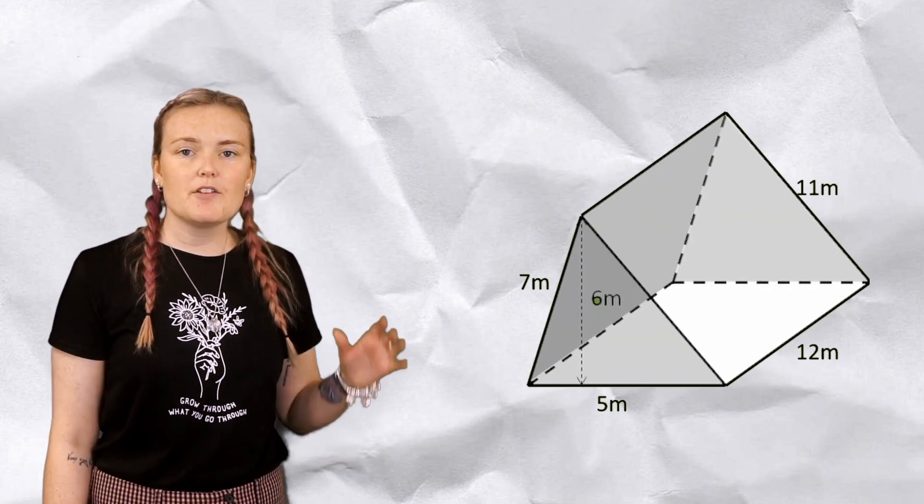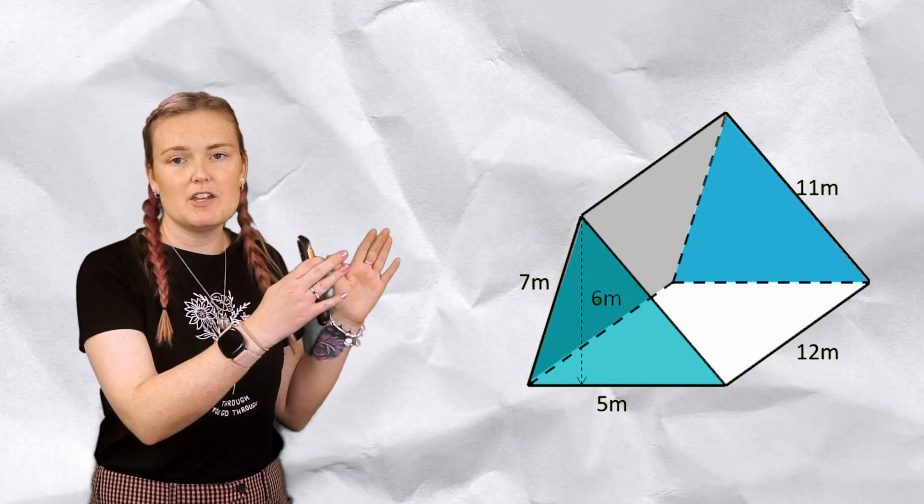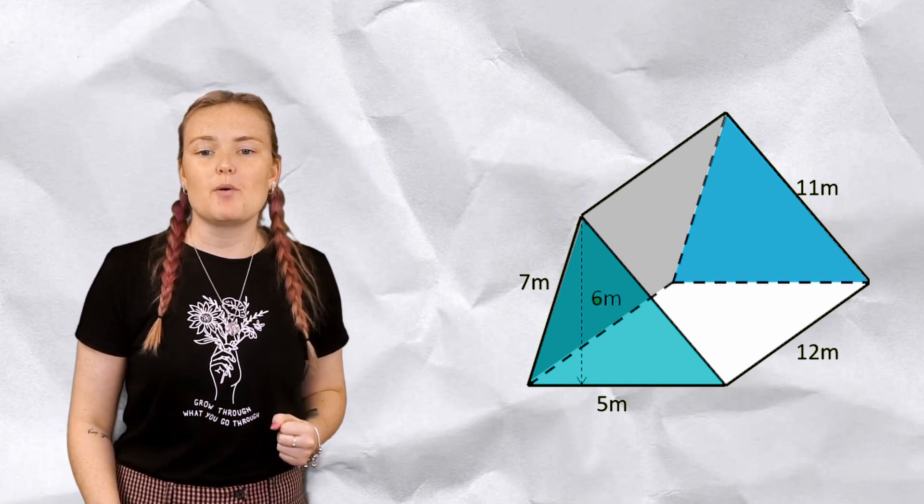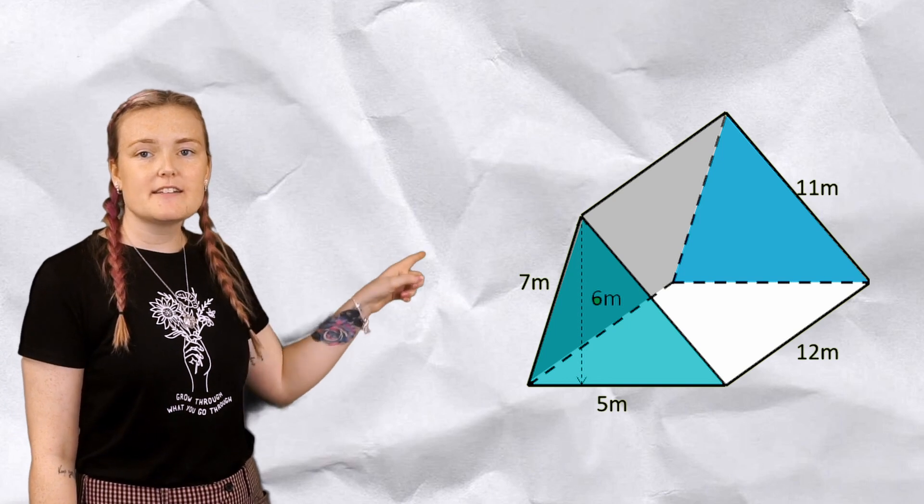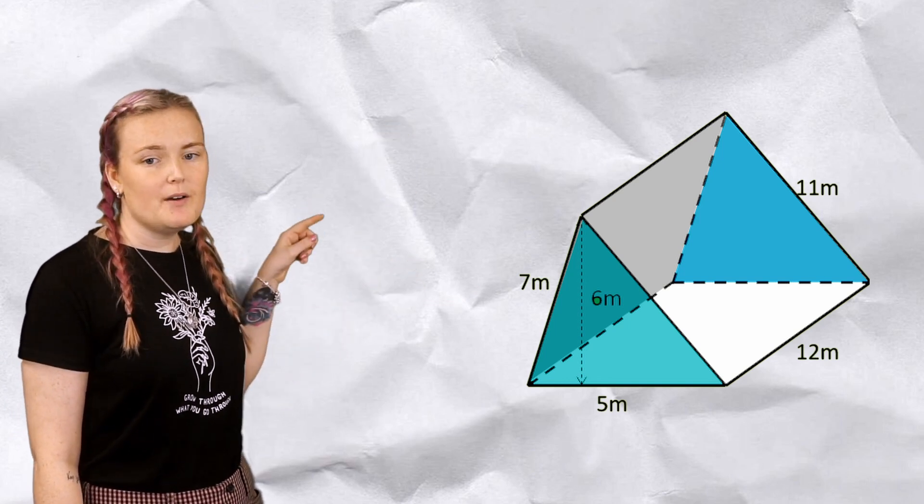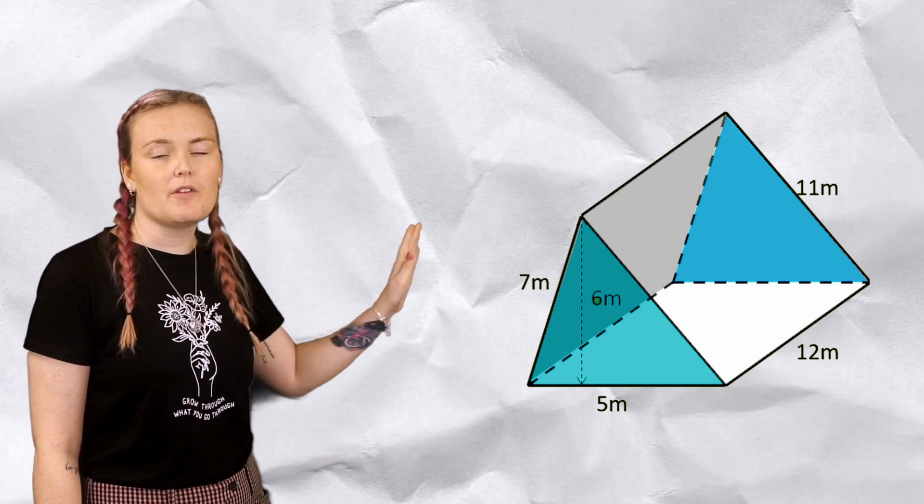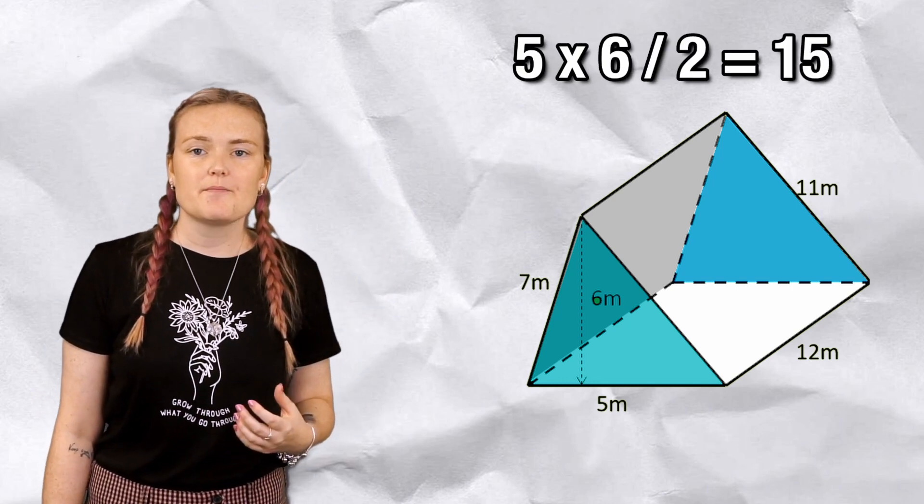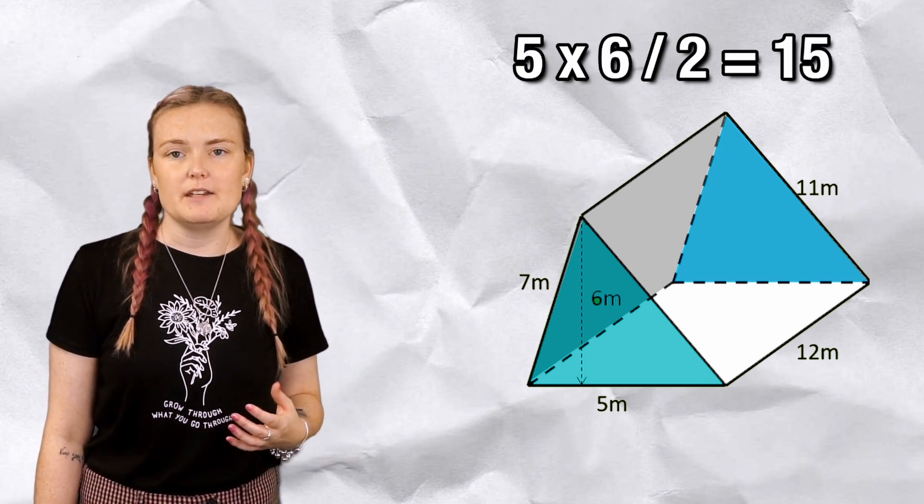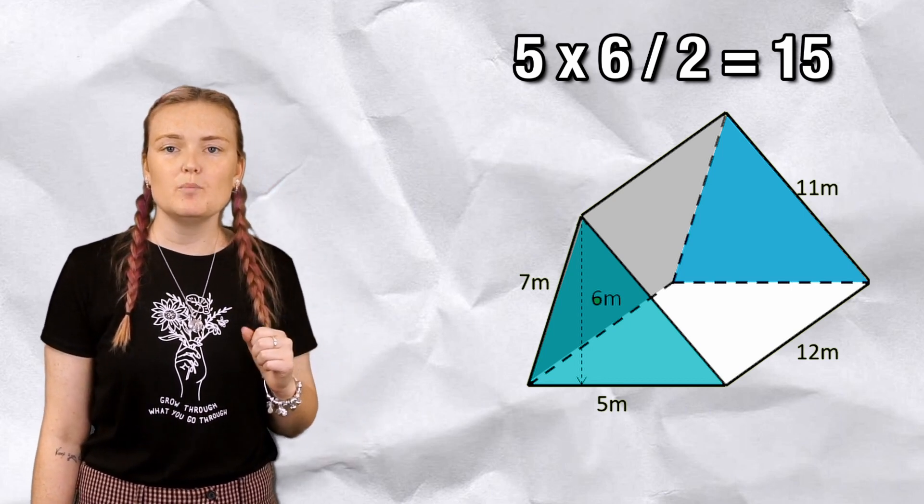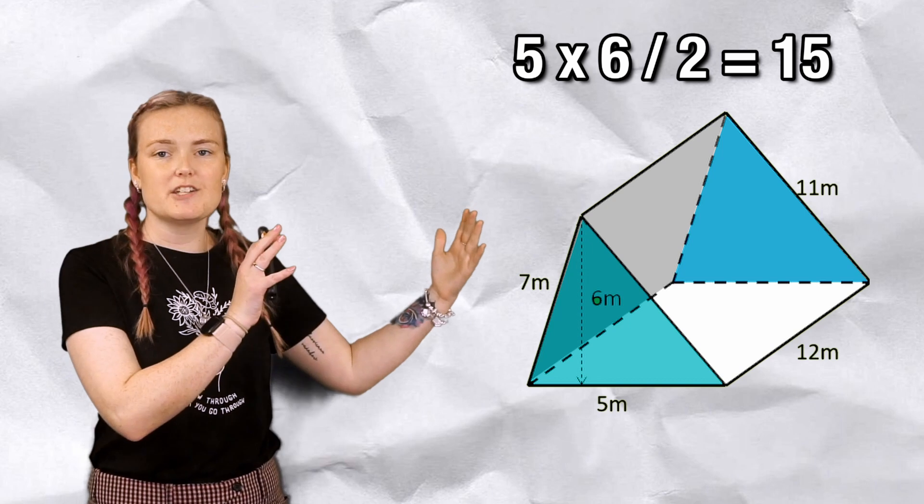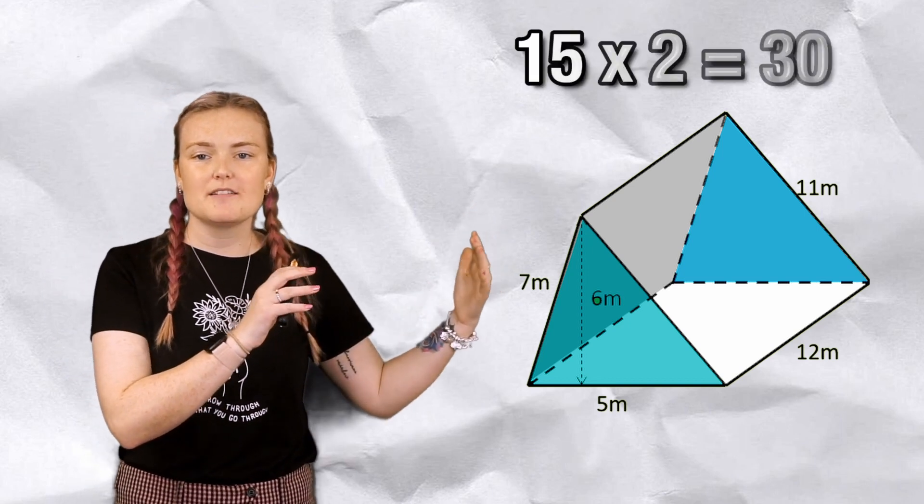Now let's look at a harder one, a triangular prism. So I've got a few different faces here. I've got the triangles that are the same each side, so let's find the area of one of those. The base is 5, the height is 6. Remember we don't want the diagonal, we only want the height. So 5 times 6 is 30 and half of that is 15. So the area of one of my triangles is 15, but I've got it twice because I've got it each end, so let's double that, so 30.